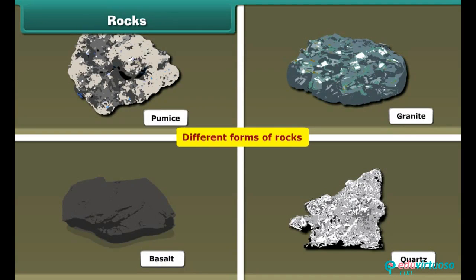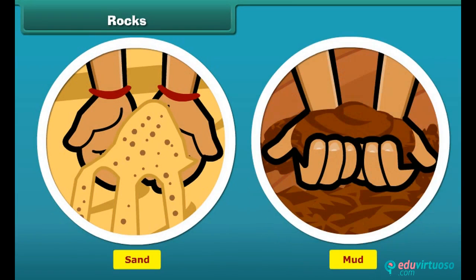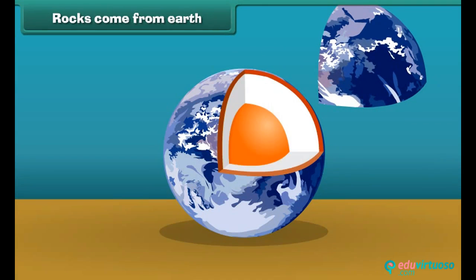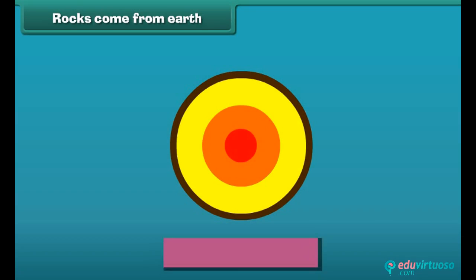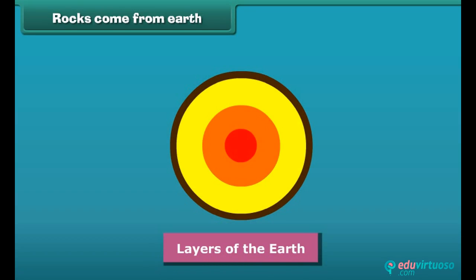You will be surprised to know that rocks aren't always huge solids — sand and mud are also forms of rocks. All rocks come from the earth, and all three layers of the earth are made up of rocks. So we can say that rocks are formed inside the earth. The outermost layer of the earth is called the crust, which is formed by solid rocks and soil.